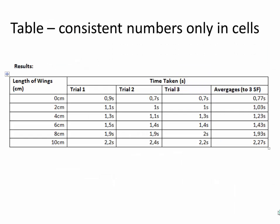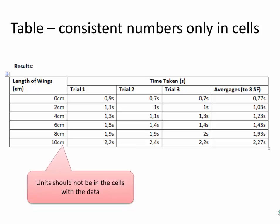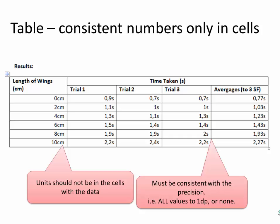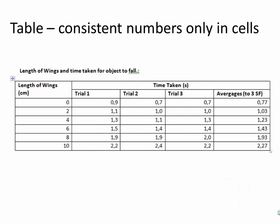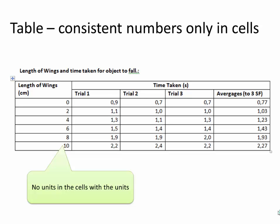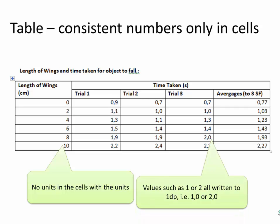Another thing about the table: the values need to be consistent and you must have numbers only in the cells. The units should be in the column heading, not inside the cells. Also, if you have 2.2 seconds in one row, don't write just '2' in another — if you're going for one decimal place, all values should be one decimal place. So '2' should be written as '2.0'. Notice we're now consistent with decimal places in each column, and we have a better description.